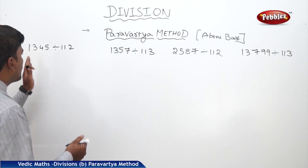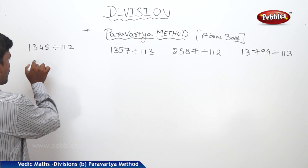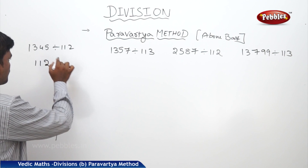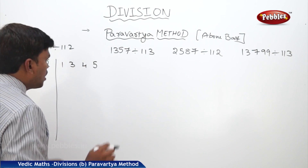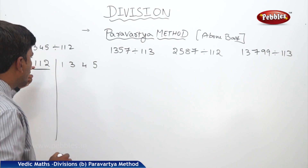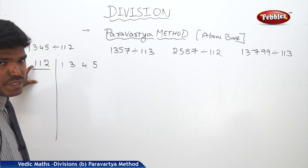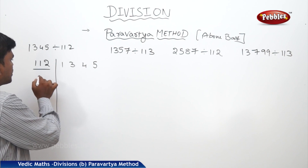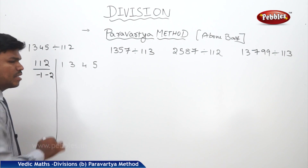For example, I want to divide 1345 by 112. Write down 1, 1, 2 like this, and then 1, 3, 4, 5. Now put a bar under the divisor, leaving the leftmost digit. What is the leftmost digit here? It is 1. Leaving the leftmost digit, write the remaining digits as they are but with opposite signs — that is, negative.